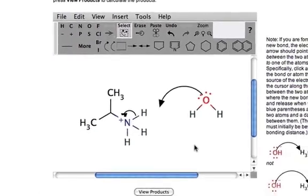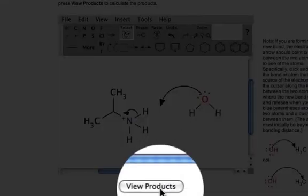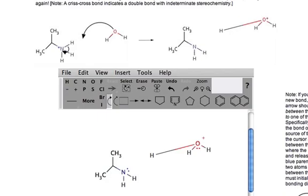So all you do is you draw this in here with the arrows, go to view products at the bottom, and ACE processes it right here.